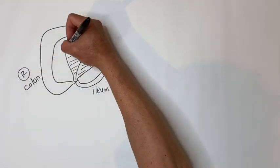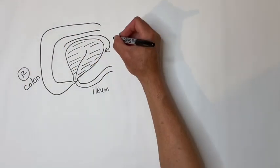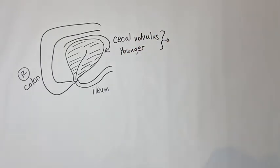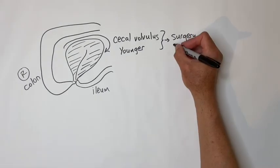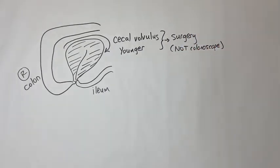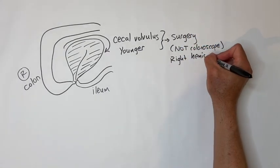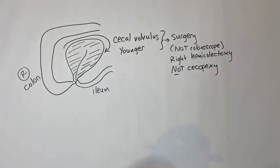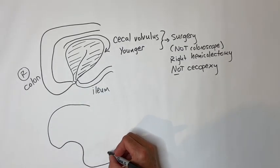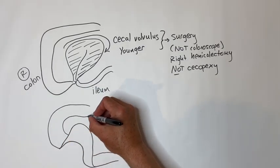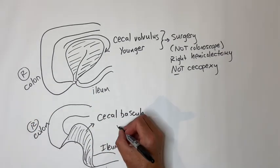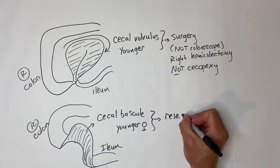Cecal volvulus occurs in younger patients than sigmoid volvulus and is due to abnormal attachments of the right colon. Cecal volvulus is not treated with decompressive endoscopy — it requires surgery. The safest surgery is a right hemicolectomy; simple cecopexy is associated with high recurrence risk. Cecal bascule is when the cecum folds up and over on itself, and resection is the best treatment, especially since it is common in younger women and you want to decrease future recurrence.